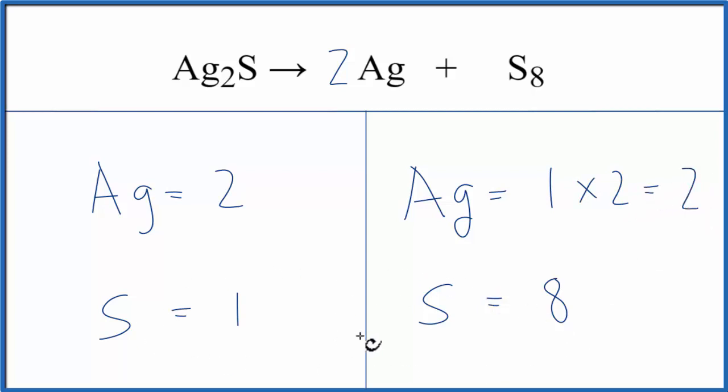But our sulfurs, we need to fix those. So we need eight total on this side, so we're going to have to multiply this by eight.